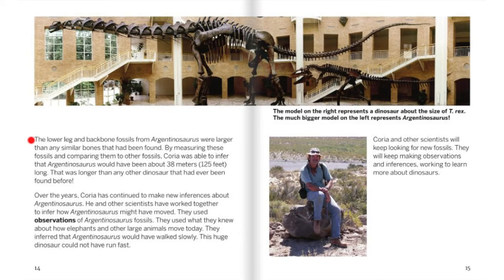The lower leg and backbone fossils from Argentinosaurus were larger than any similar bones that have been found. By measuring these fossils and comparing them to other fossils, Correa was able to infer that Argentinosaurus would have been about 38 meters — 125 feet — long. That was longer than any other dinosaur that had ever been found before. Over the years, Correa and other scientists inferred how Argentinosaurus might have moved, using observations of Argentinosaurus fossils and what they knew about how elephants and other large animals move today. They inferred that Argentinosaurus would have walked slowly.